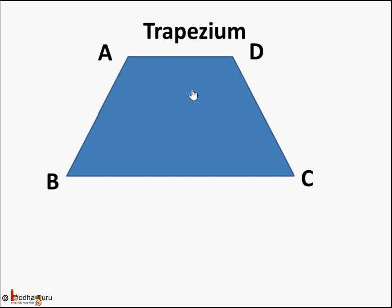It's a special type of quadrilateral where only two sides are parallel. Other two sides are not. We know if all four sides are parallel, it's a parallelogram. So trapezium has only two sides parallel.